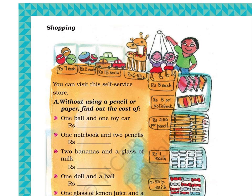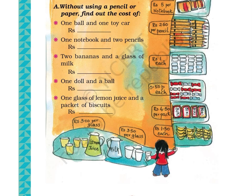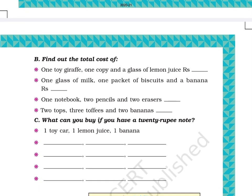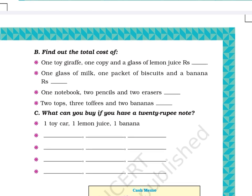Page 195, continues from previous page. Question B: Find out the total cost of: Part A – One toy giraffe, one toffee, and a glass of lemon juice. Rs. ___. Part B – One glass of milk, one packet of biscuits, and a banana. Rs. ___. Part C – One notebook, two pencils, and two erasers. Rs. ___. Part D – Two tops, three toffees, and two bananas. Rs. ___.